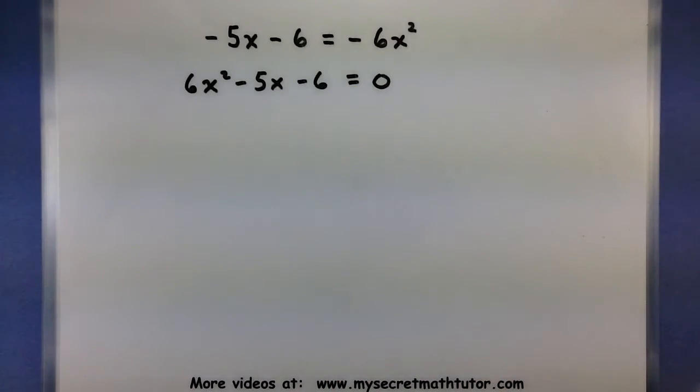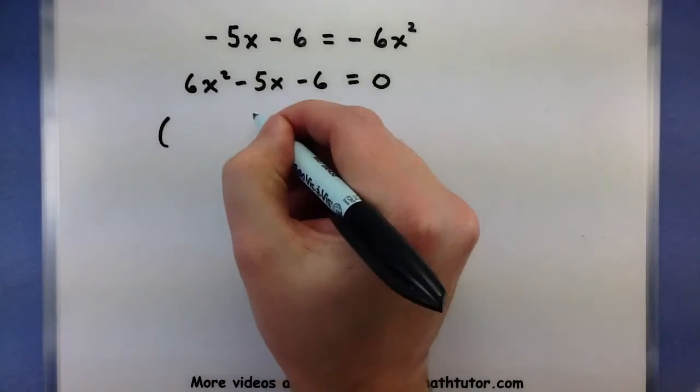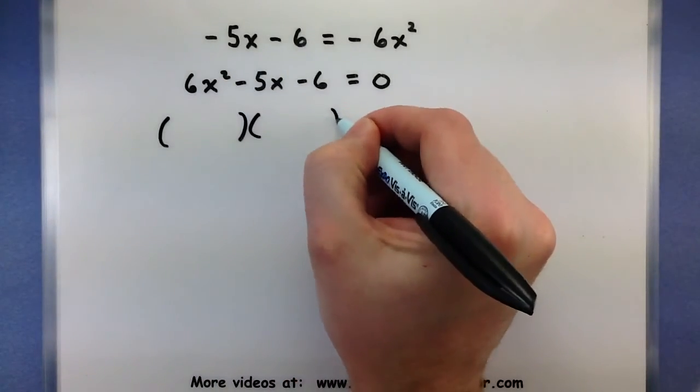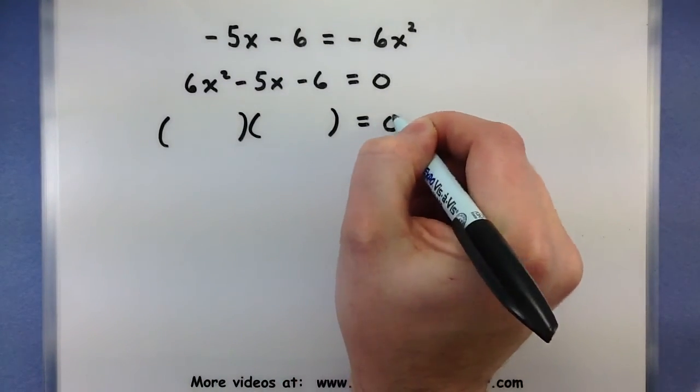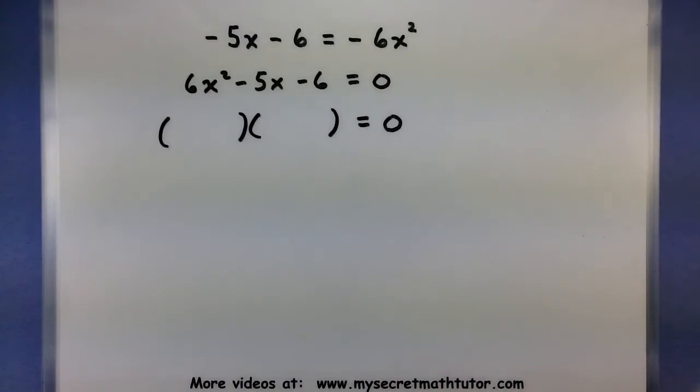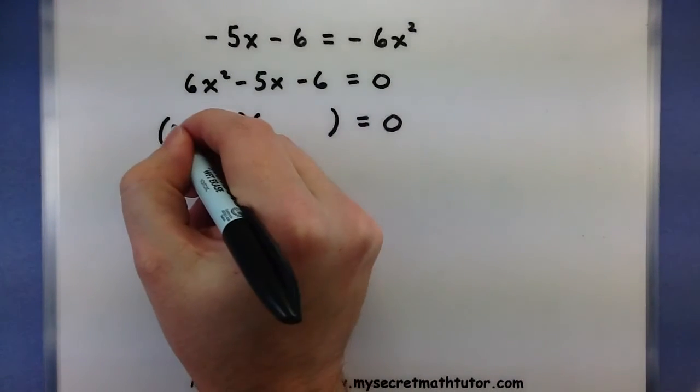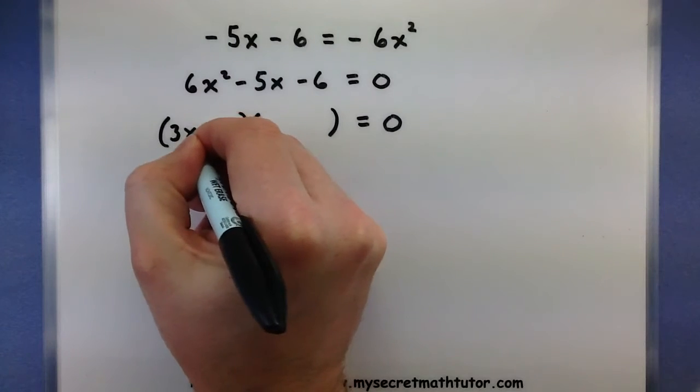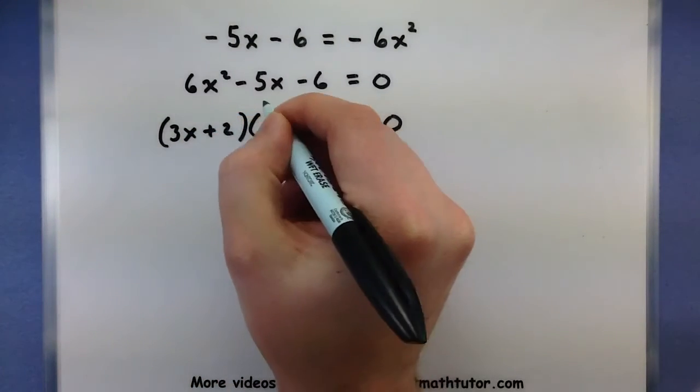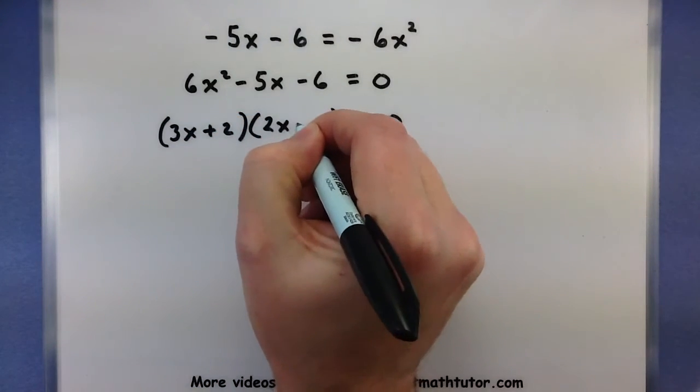Now the part where this can get really tough is actually looking at the quadratic and finding some way to factor it. Check out some of my other videos on the AC method or the guess and check method for help on breaking down these quadratics. This one does factor and it factors into the following. 3x plus 2 and 2x minus 3.